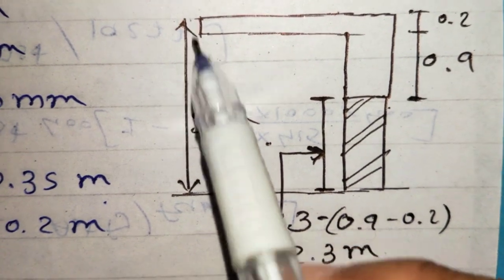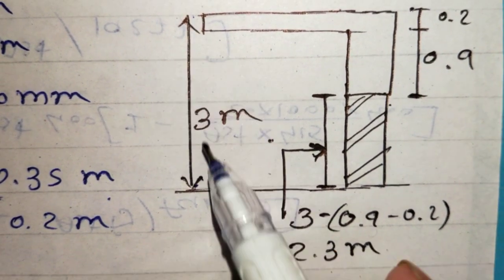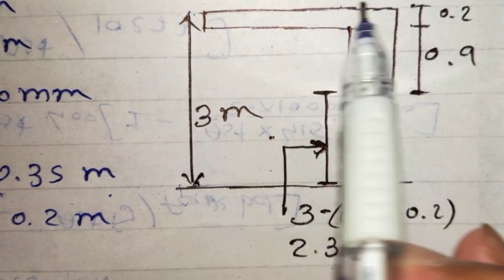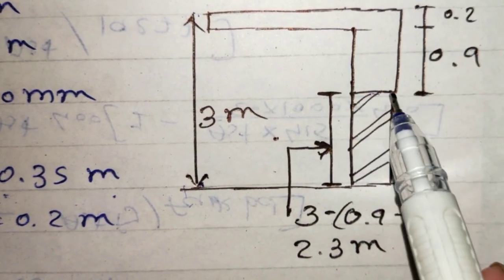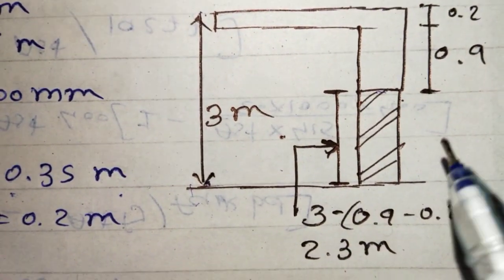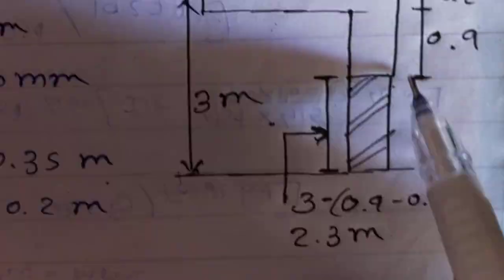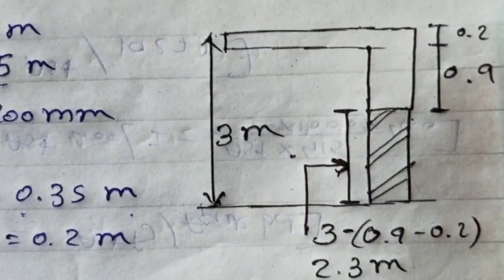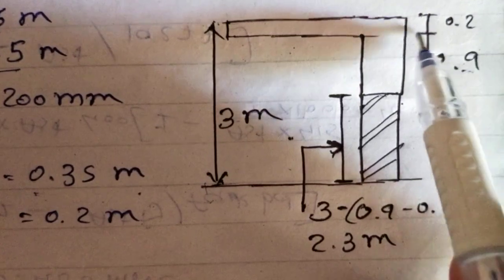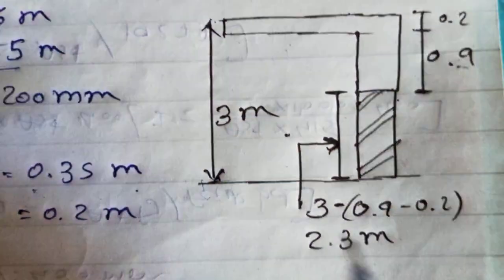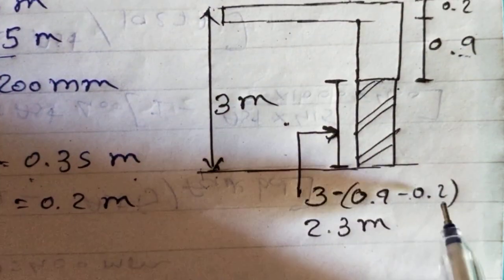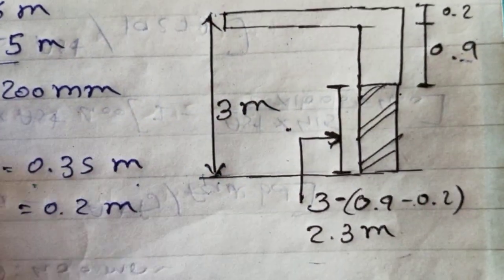This is 3 meter height of slab from this point to this point. And this is our slab, this is our beam. This is beam depth. 0.9 is beam depth and 0.2 is slab thickness. So we have this is overall 3 meter minus 0.9 minus 0.2 is 2.3 meter.